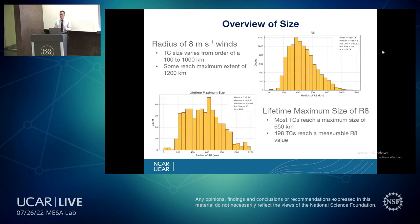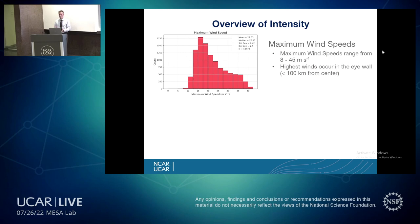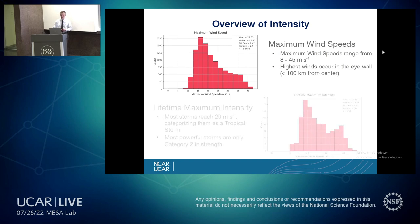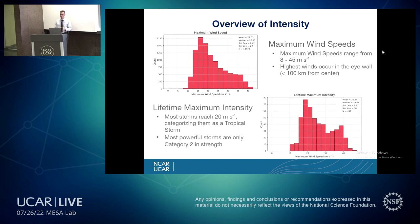Most tropical cyclones reach a maximum size of about 650 kilometers, so our inner and outer core definitions work well for this study. There are 498 tropical cyclones that reached a measurable R8 value — these are the only events used in our study. For maximum wind speeds, they range from 8 to 45 meters per second, with the highest winds occurring in the eyewall. Most storms reached about 20 meters per second, categorizing them as tropical storms. The most powerful storms produced were only Category 2, probably due to the 30-kilometer grid spacing not allowing the fine mechanisms needed for further intensification.